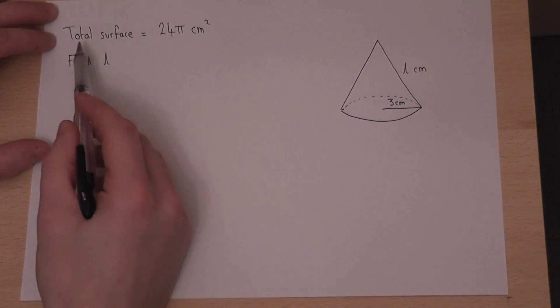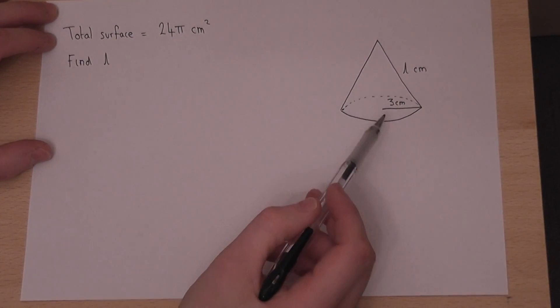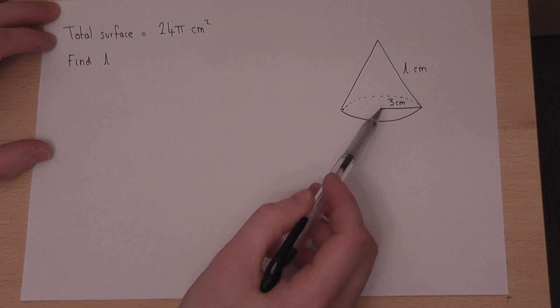This question looks at the total surface area of a cone. Now the total surface area is composed of two distinct parts.